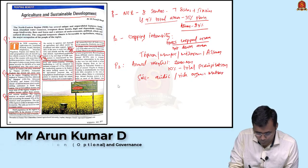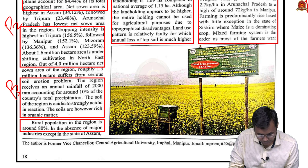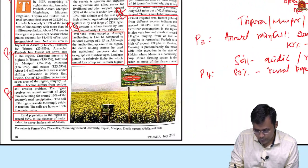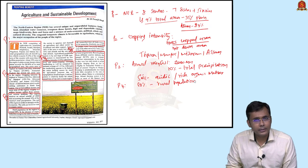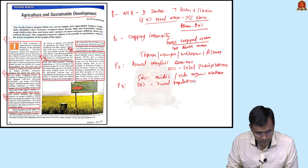Paragraph four provides another key factual point: around 80% of the Northeastern region's population lives in rural areas, indicating that the region is predominantly rural in character.